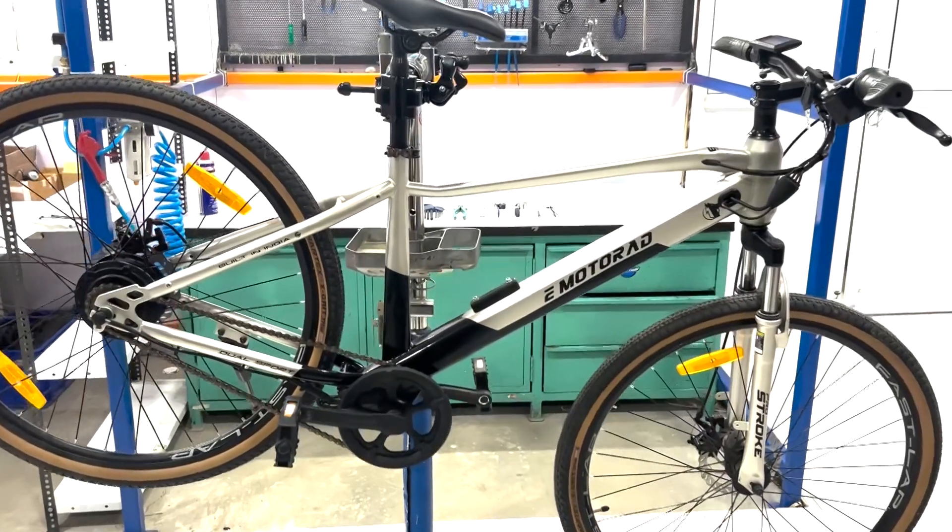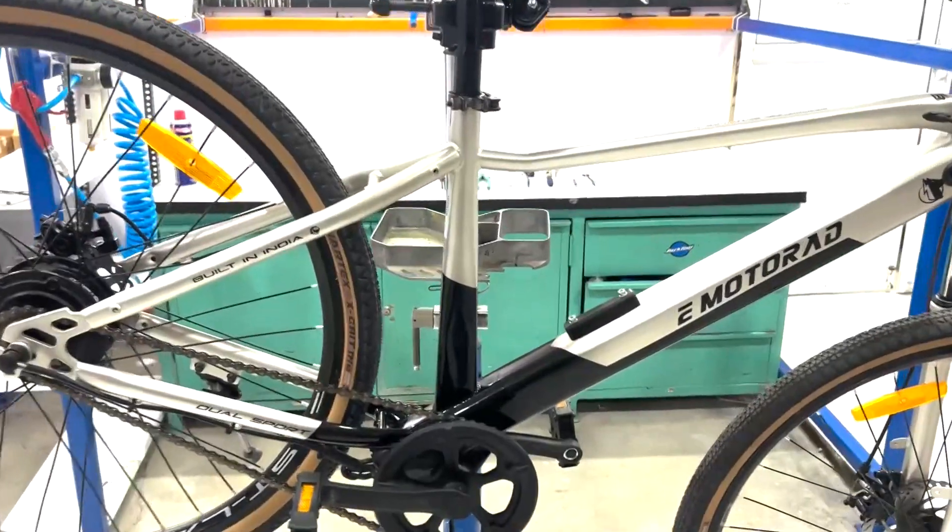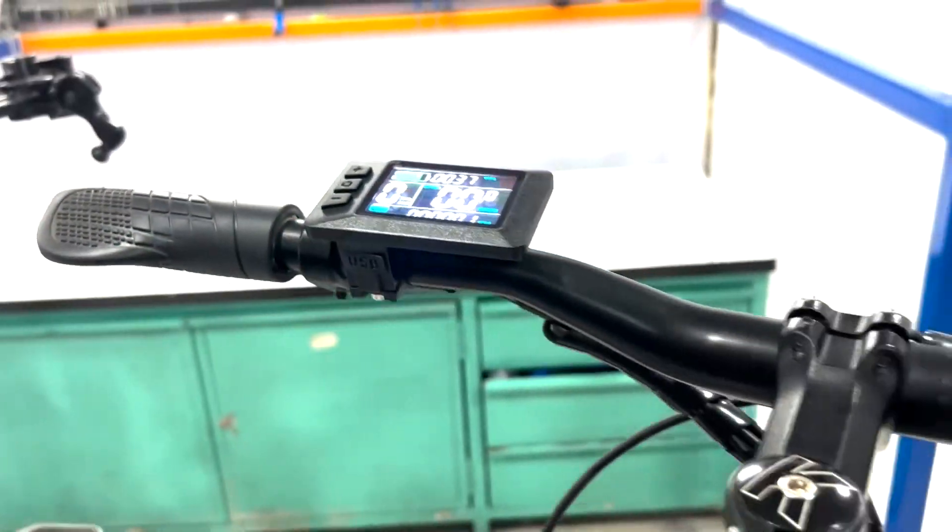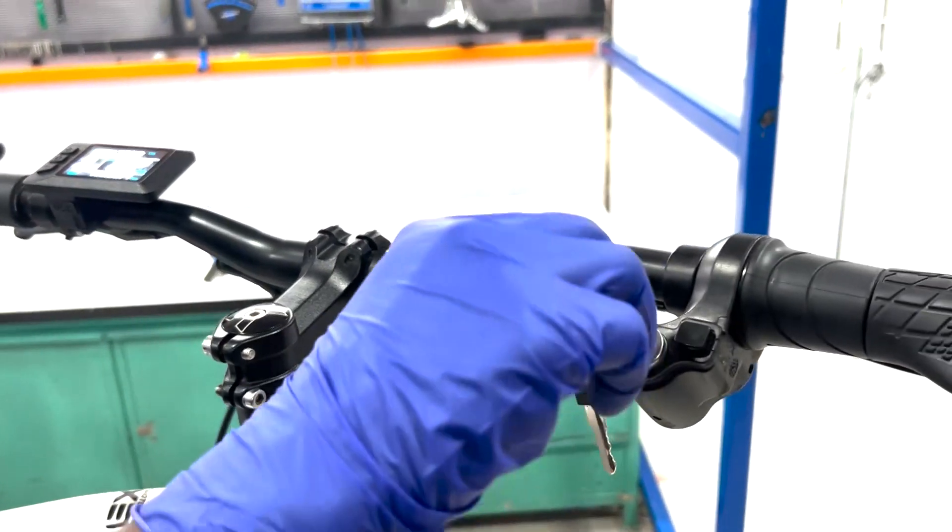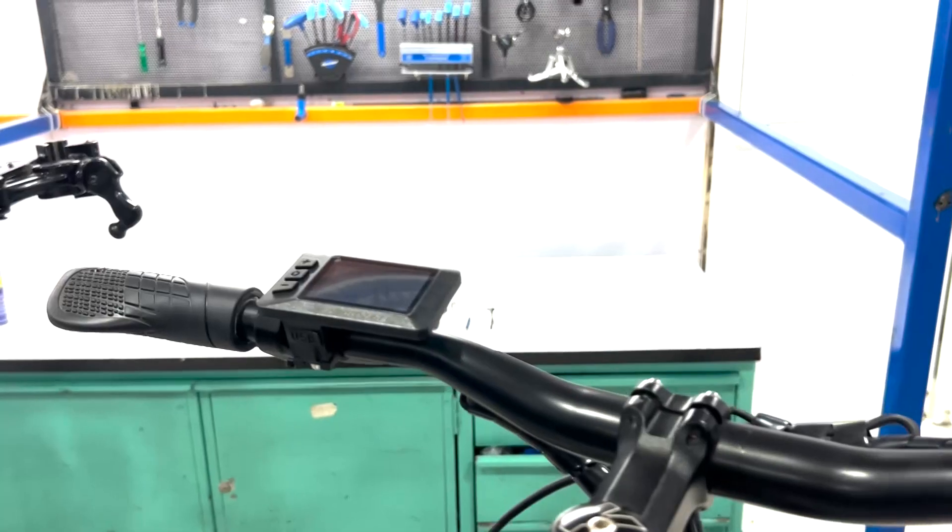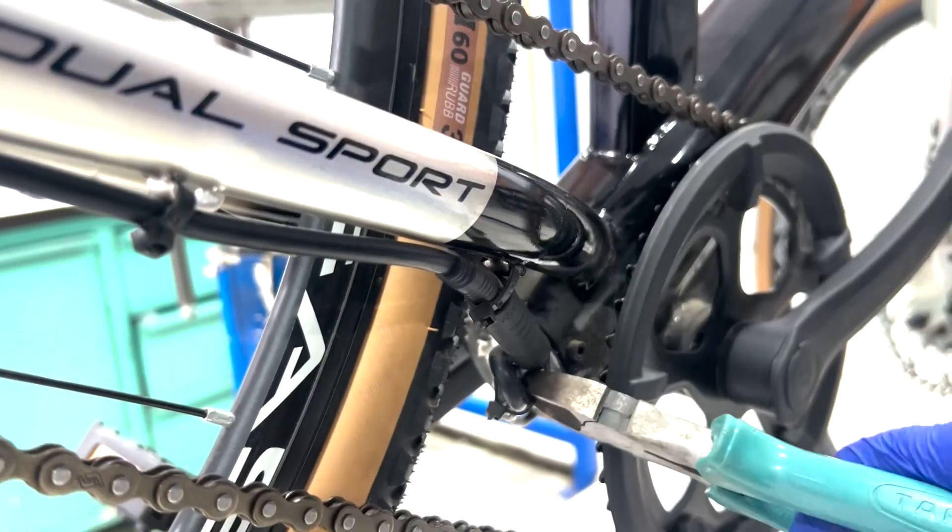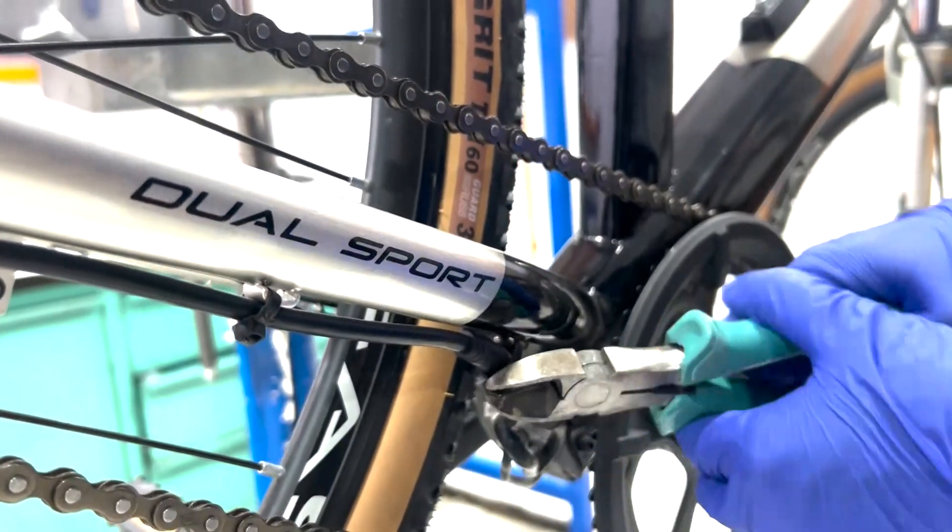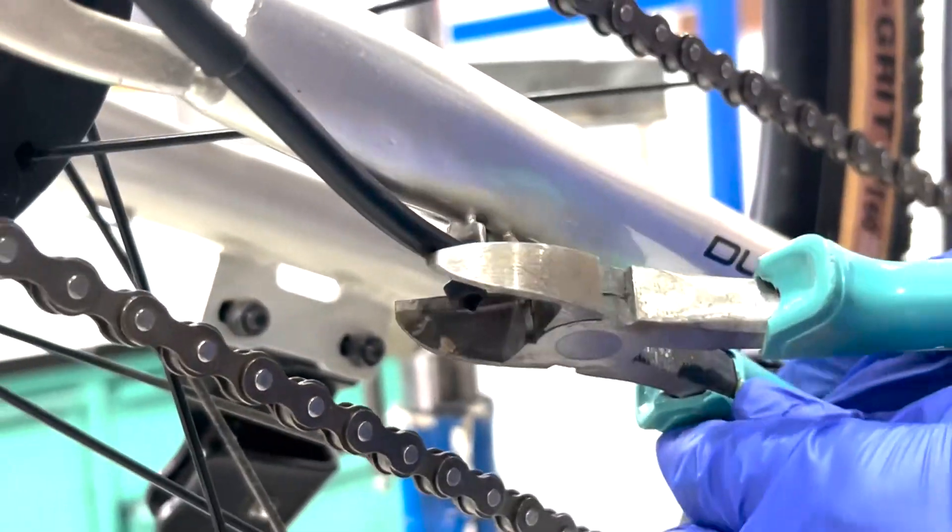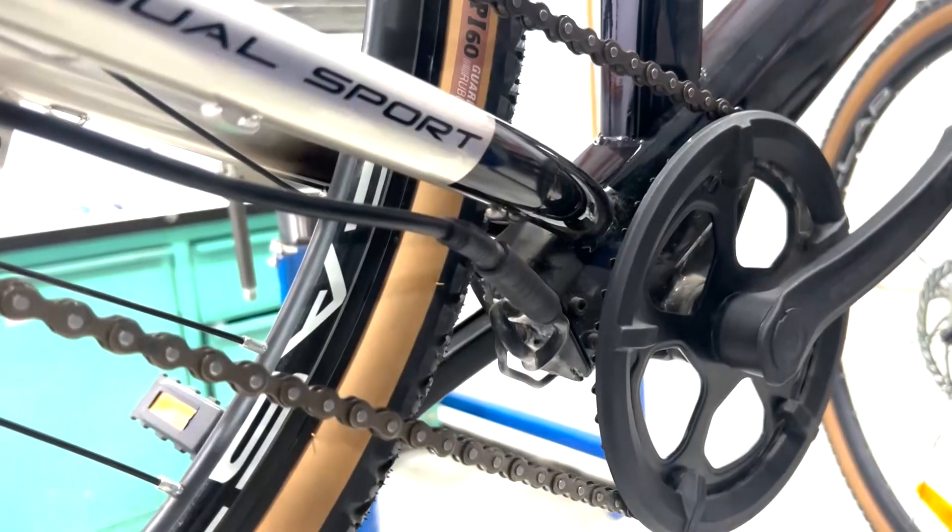First, position the eBike securely on a bike stand to ensure stability during the process. Make sure the eBike is powered off and remove the key if necessary to avoid accidental power on. Next, cut all the cable ties holding the controller to the motor cable and disconnect the motor connector.